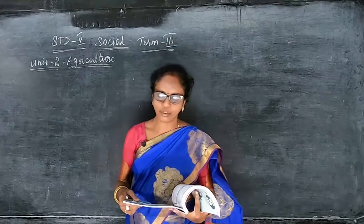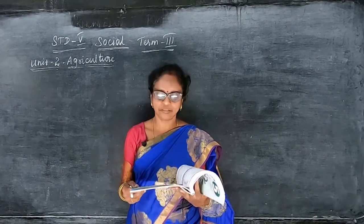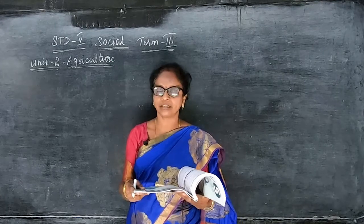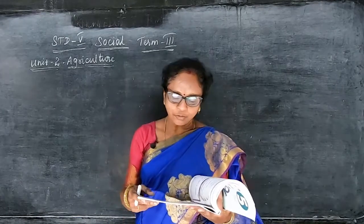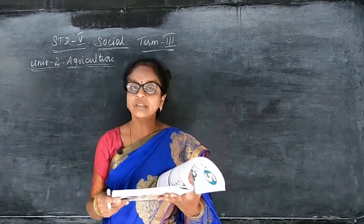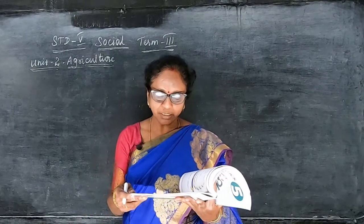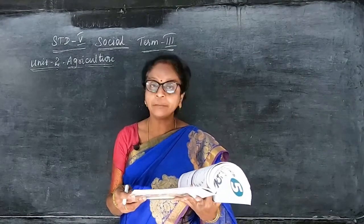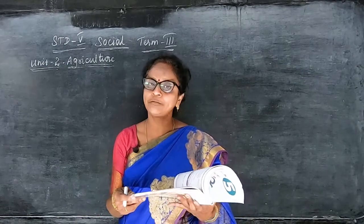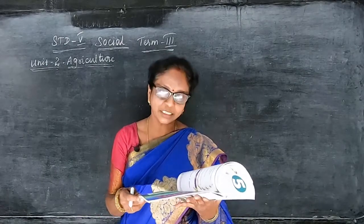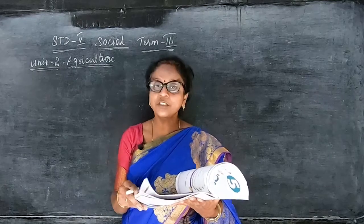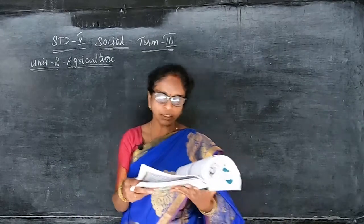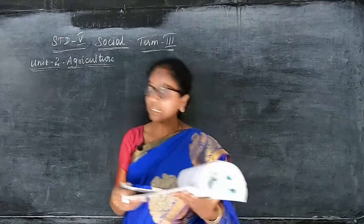Okay children, today we are going to see about the Standard 5th Social unit about agriculture. In this lesson, we are going to describe the features of agriculture, explain the different types of farming and irrigation, water facilities, and name the various crops grown in Tamil Nadu.